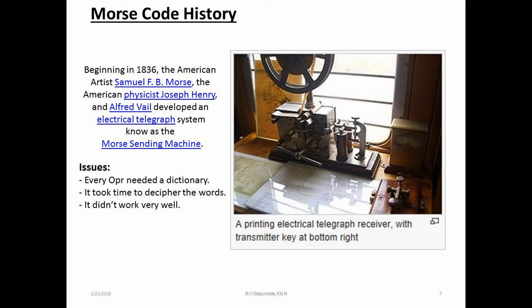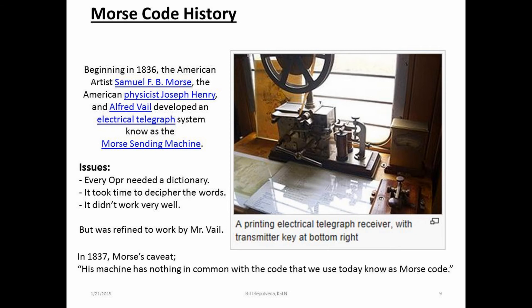It was redesigned to work by Alfred Vail, who was one of Samuel Morse's partners and contributor in the development of the telegraph. However, in 1837 as described in Morse's caveat, it states that his machine has nothing in common with the code that we use today known as Morse Code.